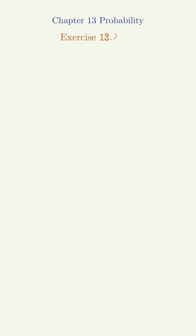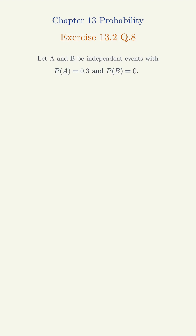Exercise 13.2, Question 8. Let A and B be independent events with P of A equals 0.3 and P of B equals 0.4. Find: 1. P of A intersection B, 2. P of A union B, 3. P of A given B, 4. P of B given A.